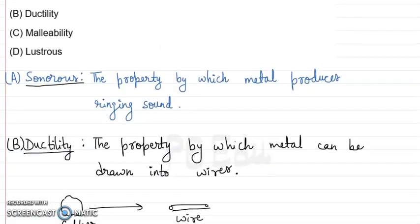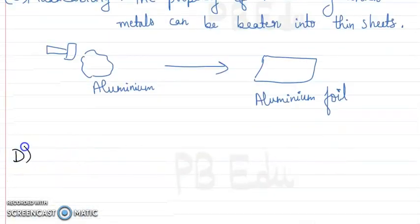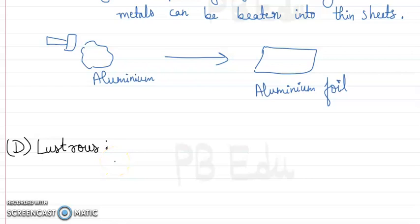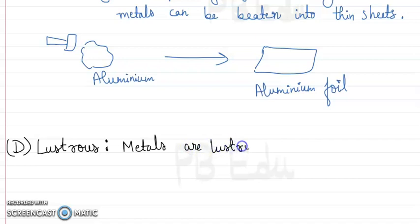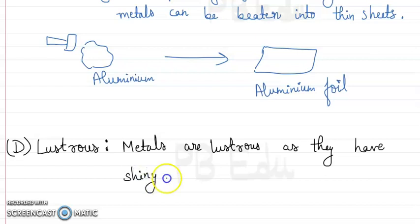Now we will move to the next property, which is lustrous. The property by which a metal shines on its surface is called lustrous. Metals are lustrous as they have a shiny surface, and this shine on their surface is the property called lustrous.